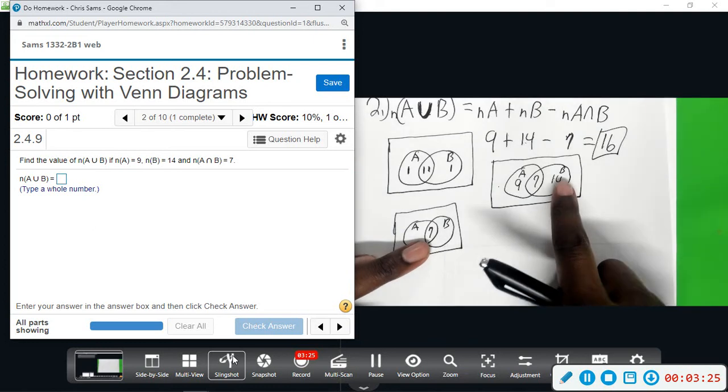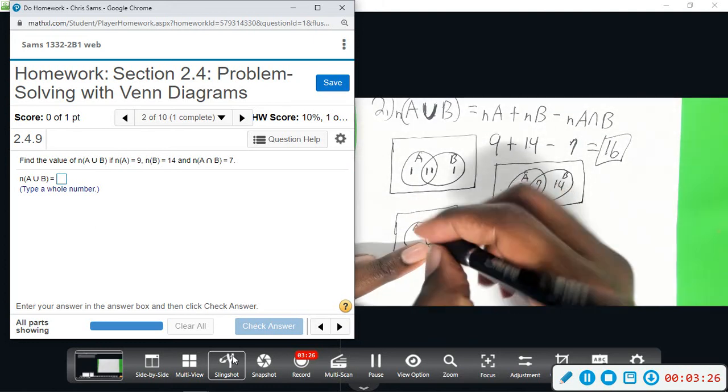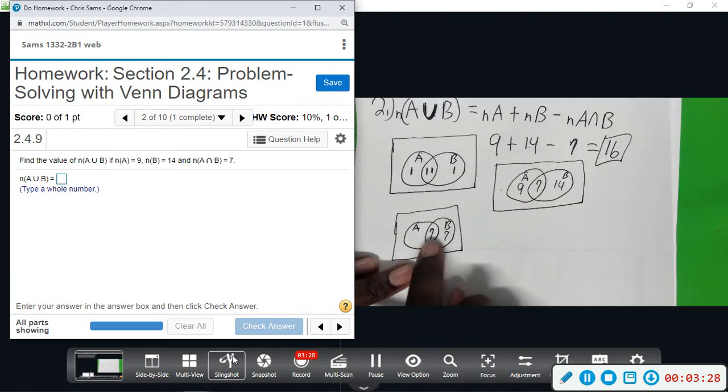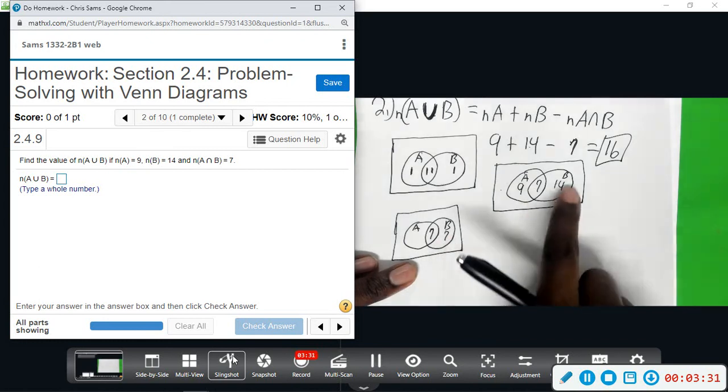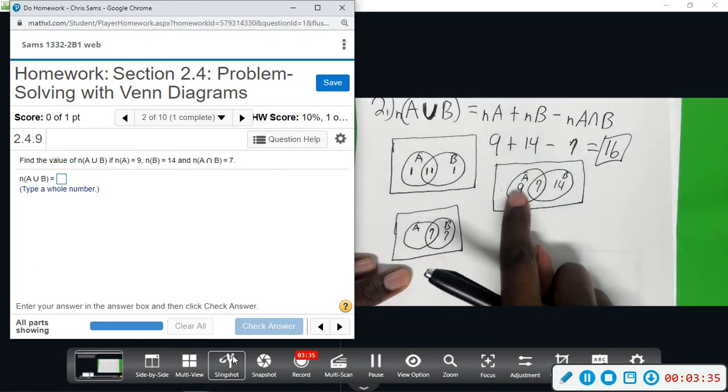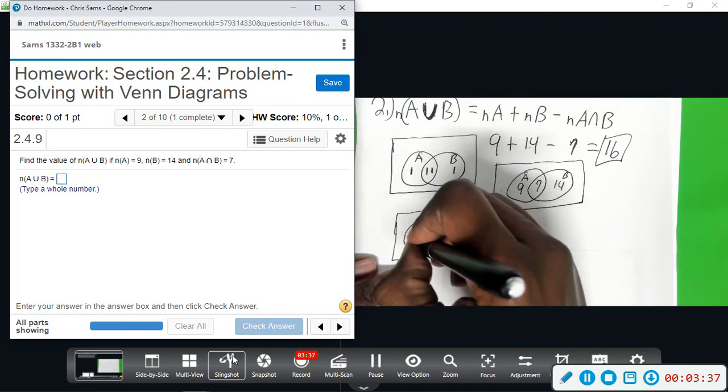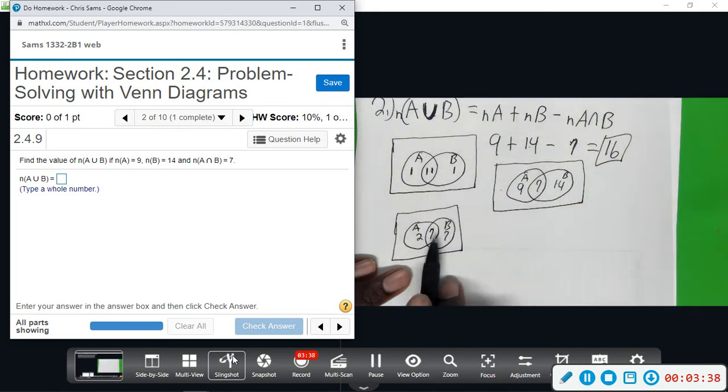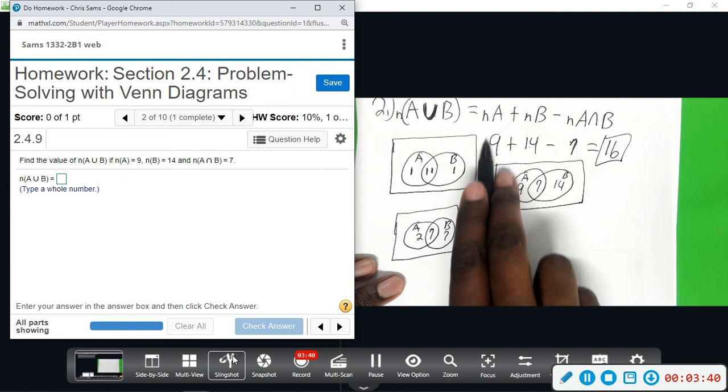So, if you take B, take away 7 from this 14, that leaves you 7. Adding 7 plus 7 giving you a total of 14 for B. And then you do the same thing for A. You're going to take 7 away from this 9 and that will give you 2, leaving you 7 plus 2 giving you 9 total elements in A.